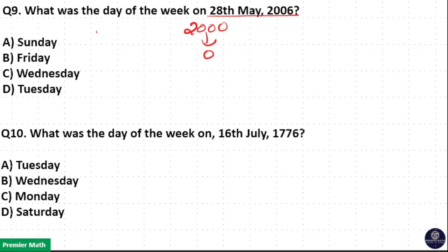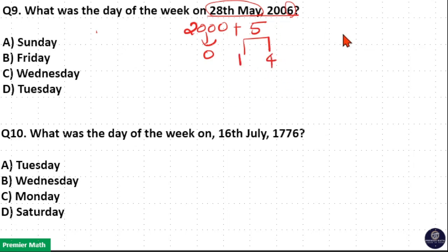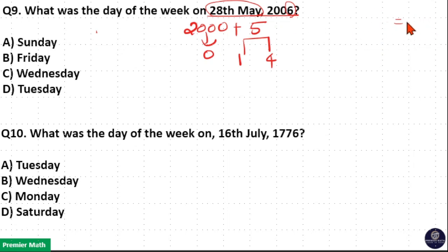Now find out the odd days in remaining years. The 2006th year is not a complete year — it only goes up to 28th May — so remaining years are five years. In five years there is only one leap year and four non-leap years. To find the leap years, divide by four. One leap year means two odd days: 1 × 2 = 2. Non-leap year means one odd day: 4 × 1 = 4. So 2 plus 4 gives six odd days.